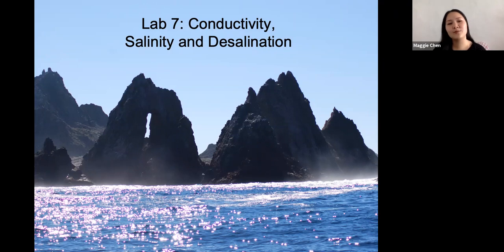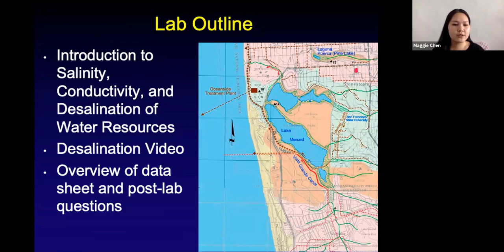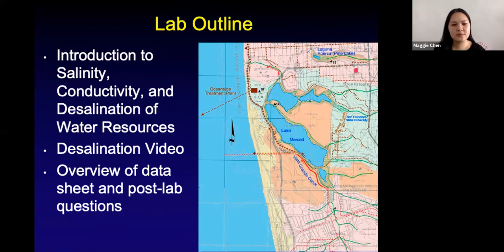These are more water quality parameters we're going over today. The lab outline for today is: first we're going to go over the introduction of salinity, conductivity, and desalination of water resources. Then we're going to watch a desalination video — how would you desalinate or distill pure water out of seawater in lab, and how that relates to how it would look in a water plant.